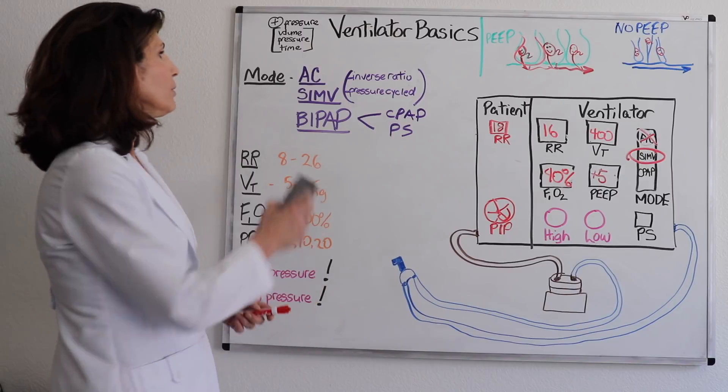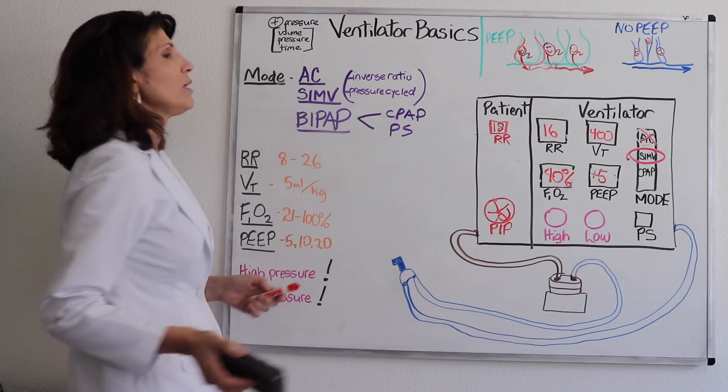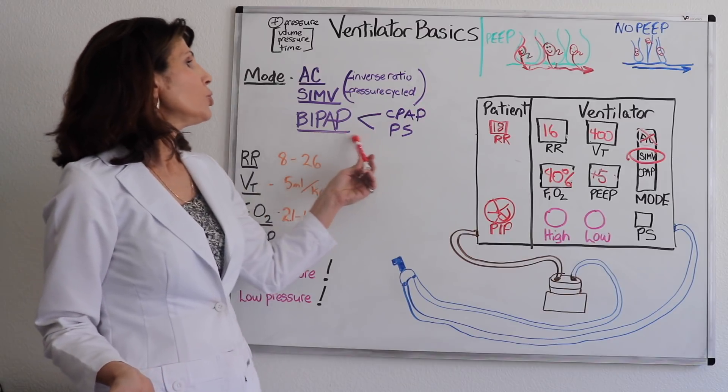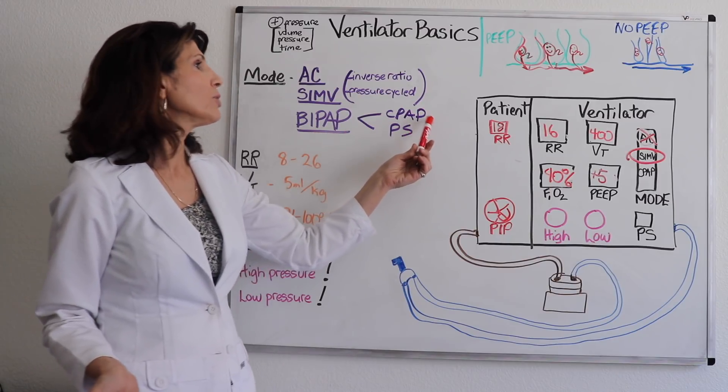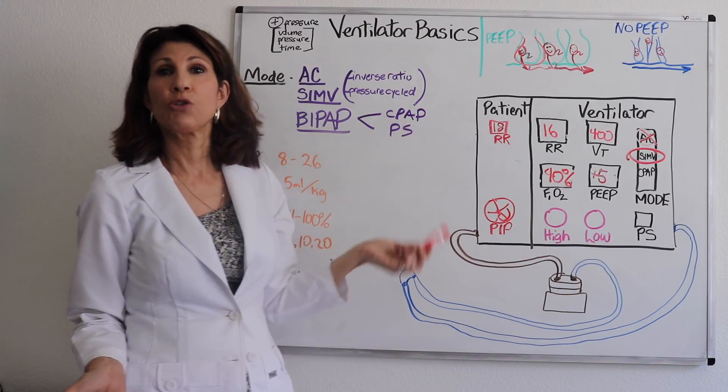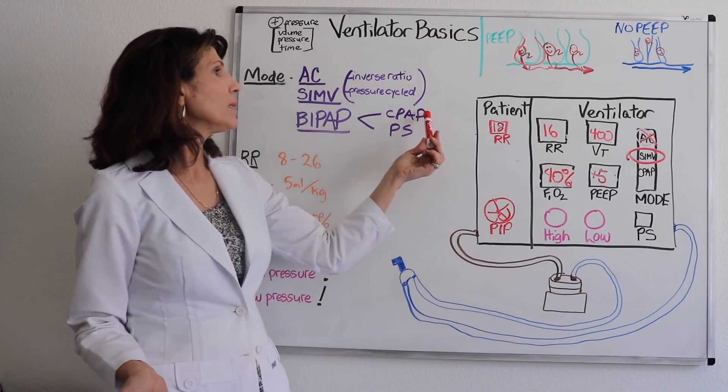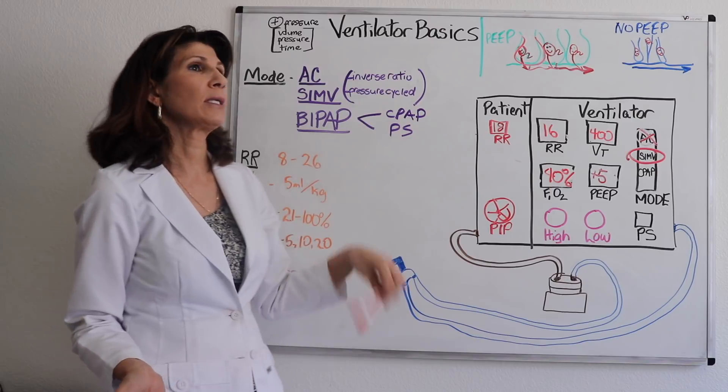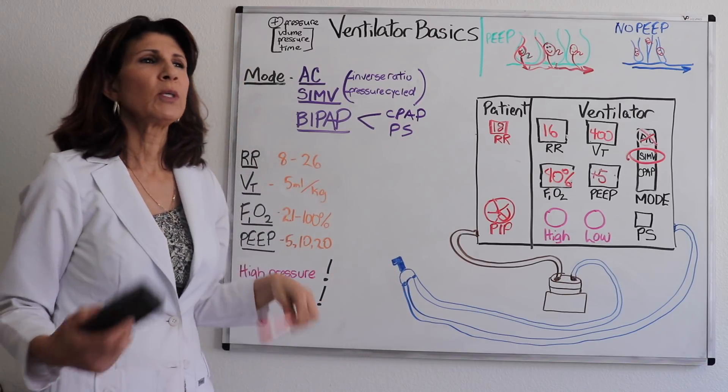Let's go on to look at really the third mode that we didn't mention yet. Third mode is called BiPAP. So BiPAP really is a combination of what's called CPAP and pressure support. So CPAP stands for continuous positive airway pressure and PS stands for pressure support.